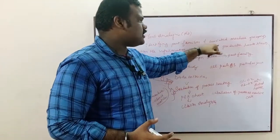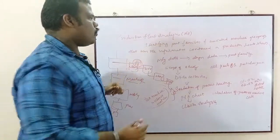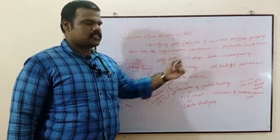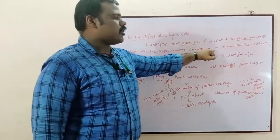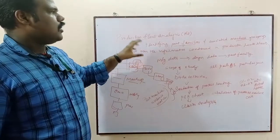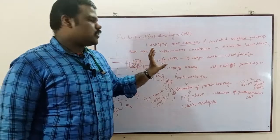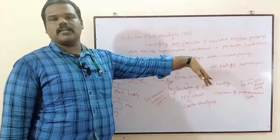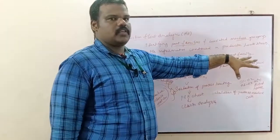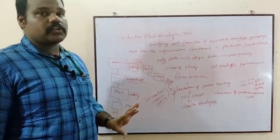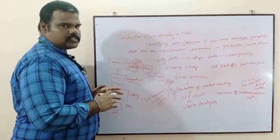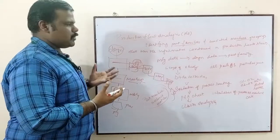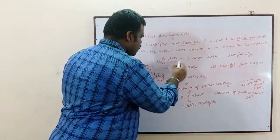Production flow analysis involves identifying part families and associated machine groupings. In production flow analysis, they will be using the manufacturing data rather than the design data in terms of part family. Normally, for the optics classification, design data is helpful. But in terms of production flow analysis, manufacturing data will be more useful.